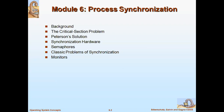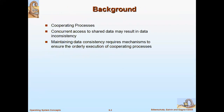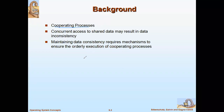Coming to what the critical section problem is — you have learned of cooperating processes. Cooperating processes are nothing but processes which share some resources. Shared resources can be in the form of memory, files, or variables that processes P1 and P2 have in common.